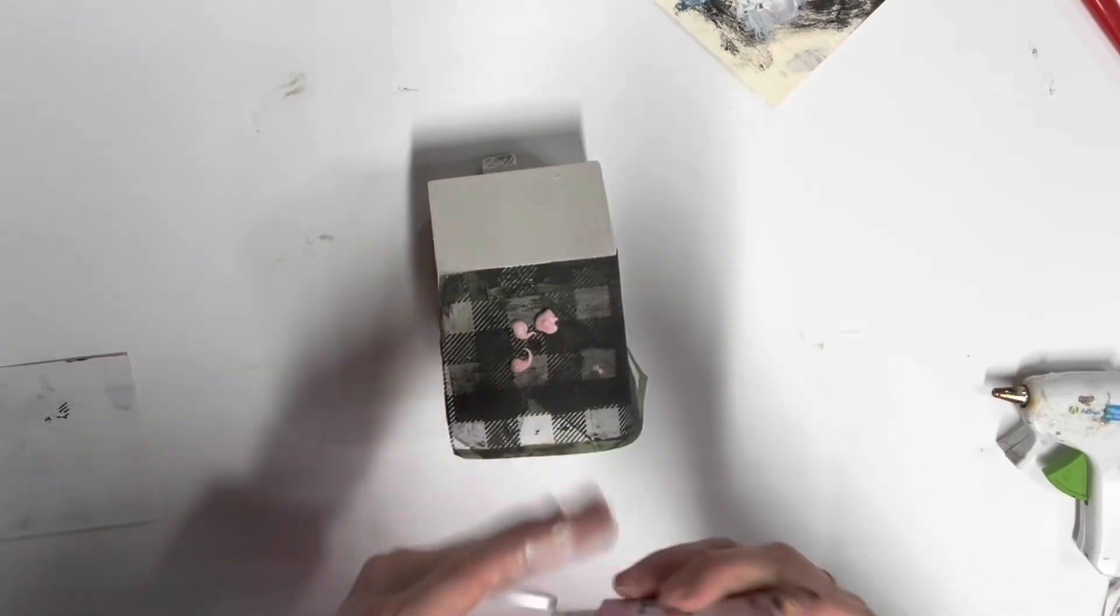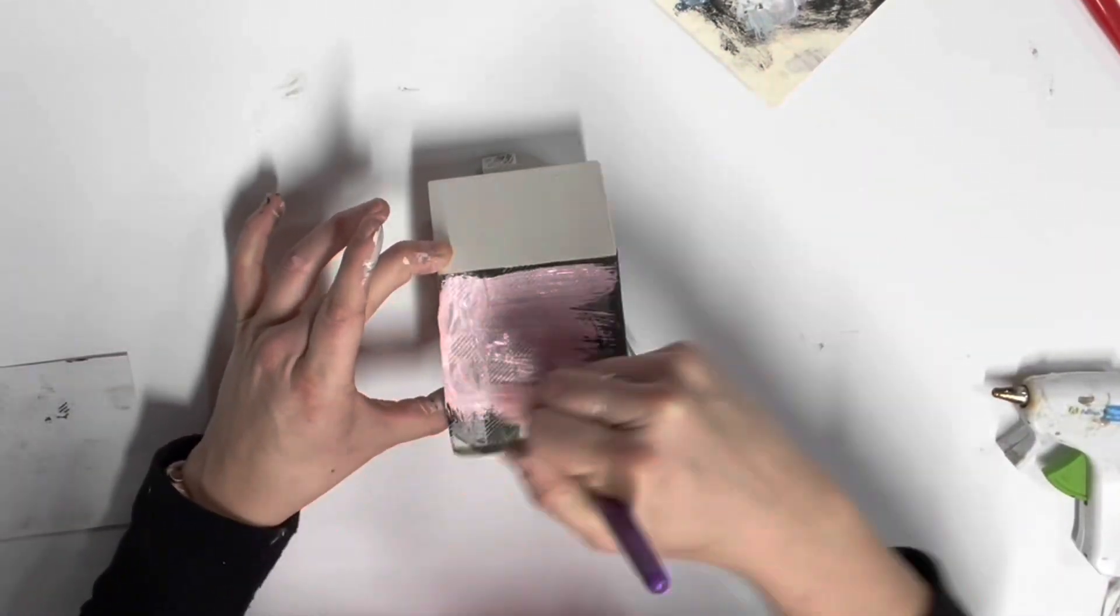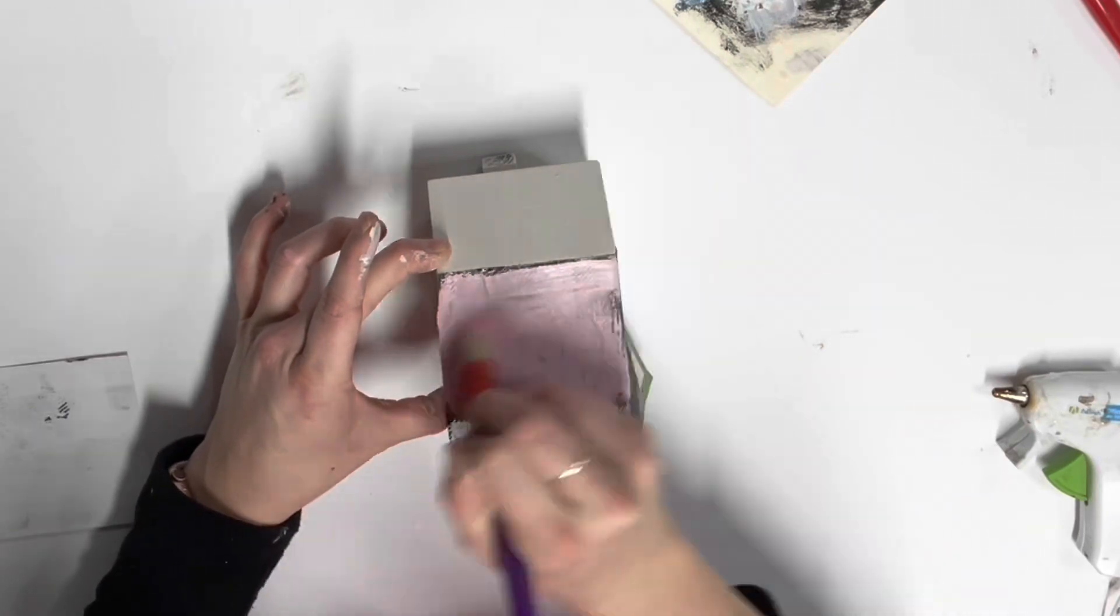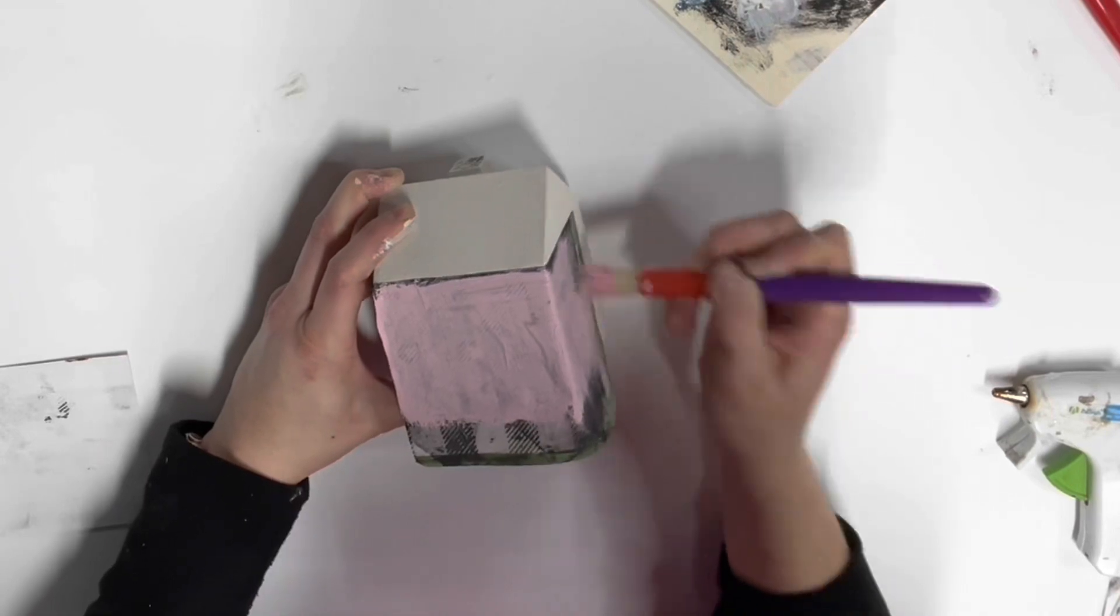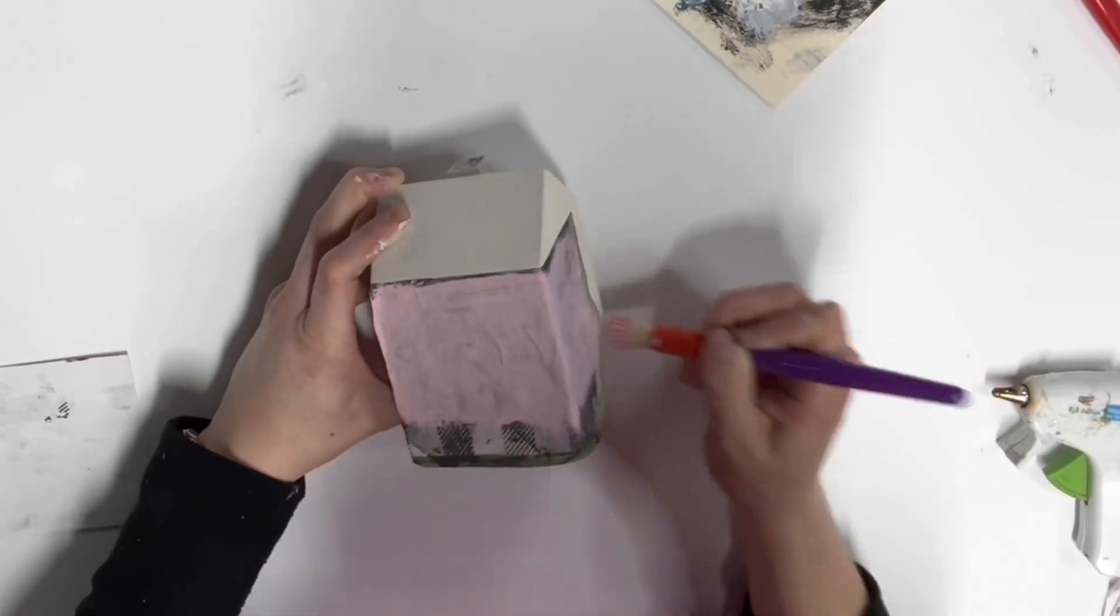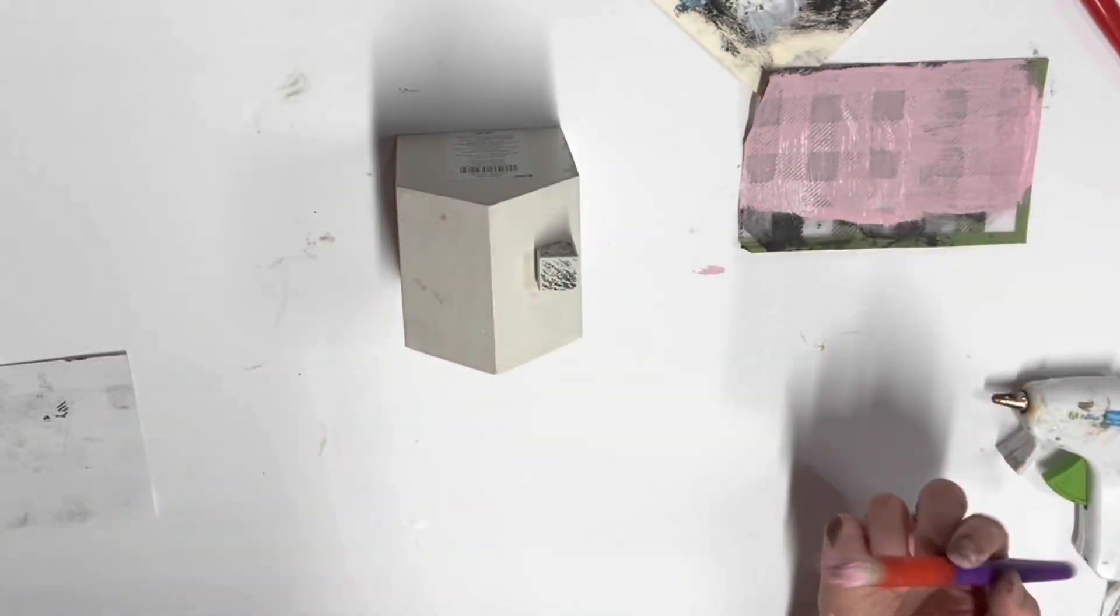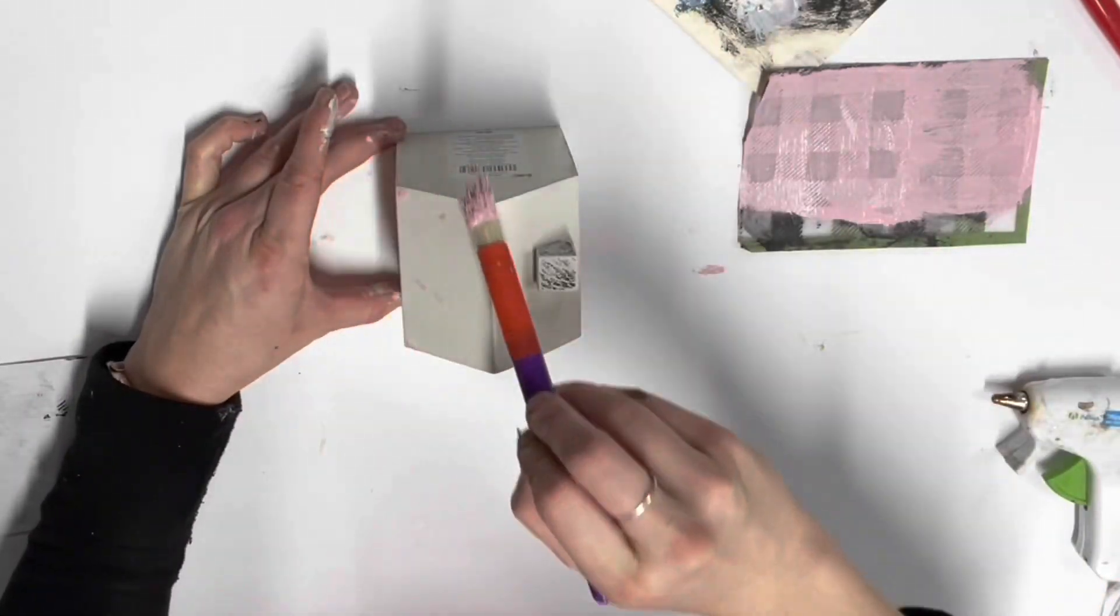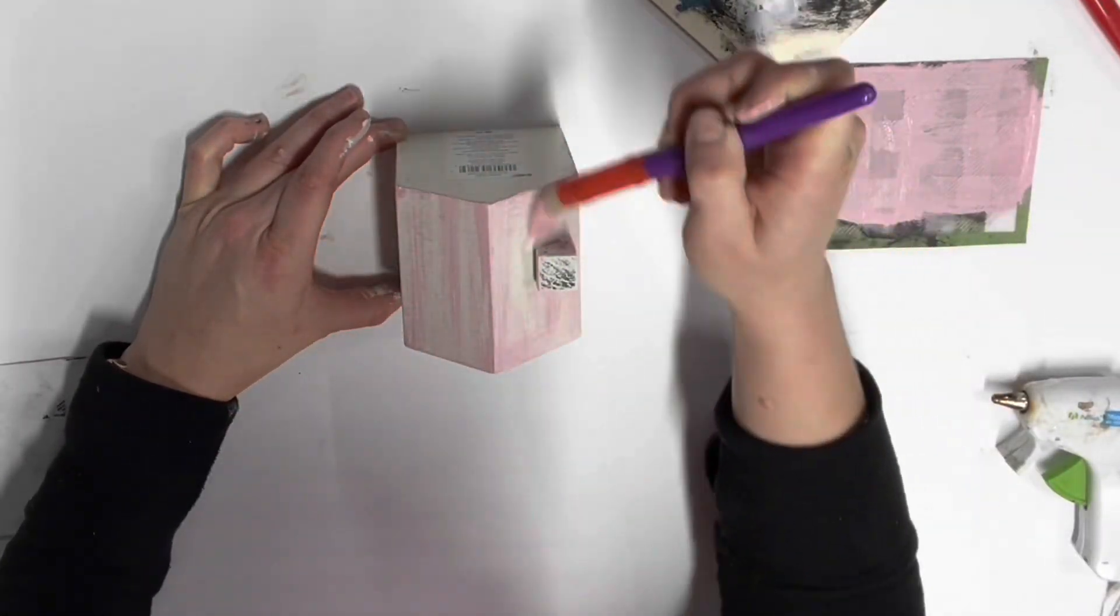Anyway, then I took this soak screen stencil and just stenciled it with some pink. And then you can see here, I just dry brushed the rest of the house with pink. I didn't really know what I want to do for the roof, but I just decided that it looked really nice. The whole thing pink.